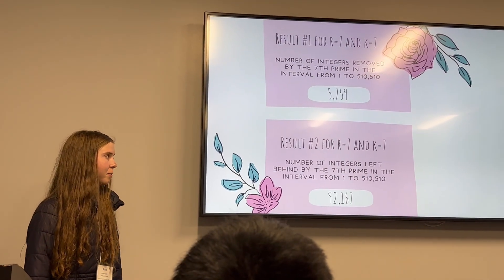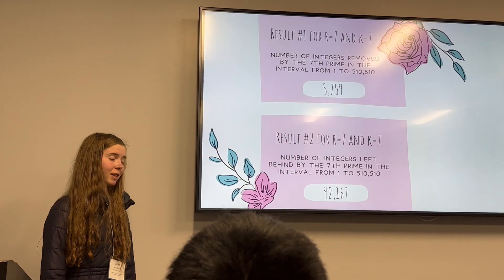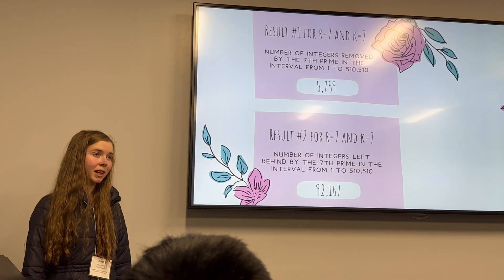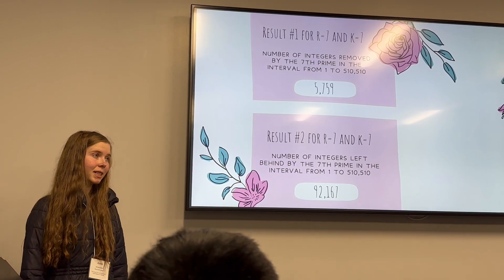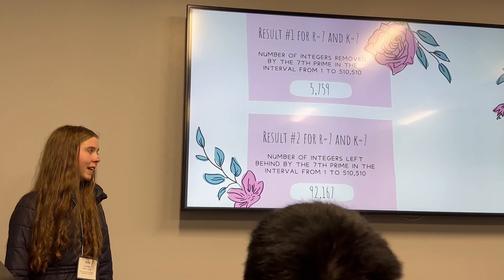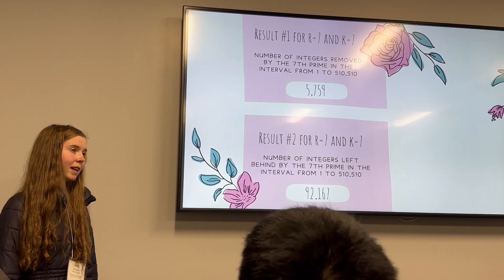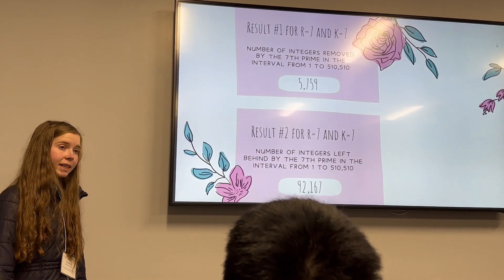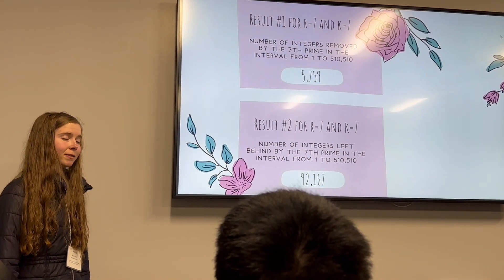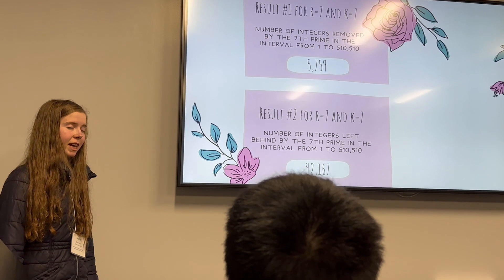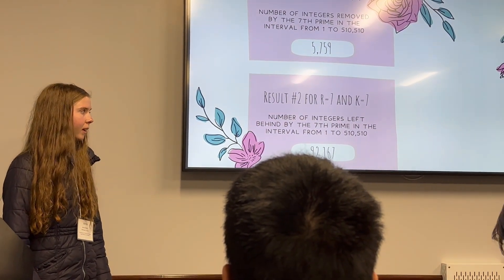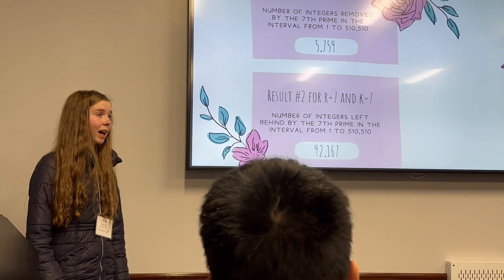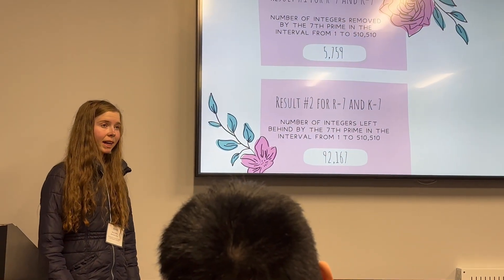If we plug those same values into our second result, we find that the number of integers left behind by that 7th prime is 92,167, which is about 18% of the amount of integers in our interval. Those numbers that are left behind have some interesting properties that we can analyze.